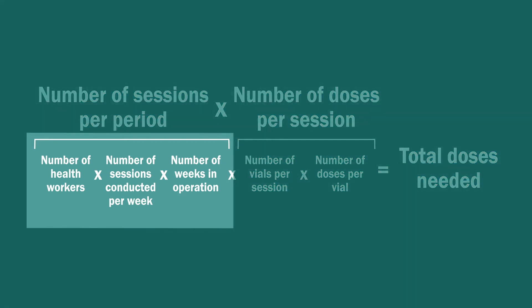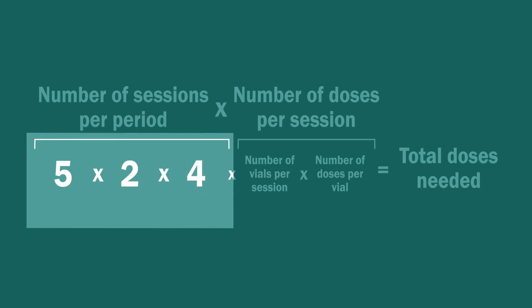First, we will calculate the number of sessions the facility plans for the next month. Let us say there are five health workers at the facility, and each health worker conducts two sessions per week, and the facility operates four weeks a month — the period for which you are planning. Multiply the numbers to calculate the total number of scheduled vaccination sessions for the month, which is 40.